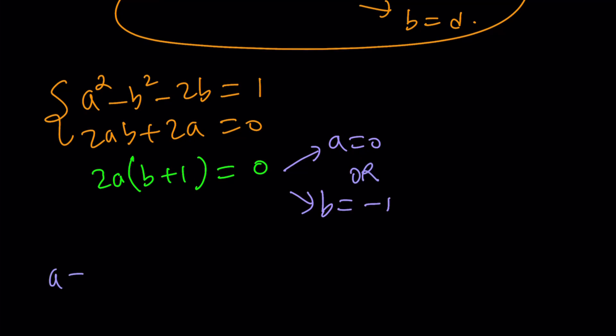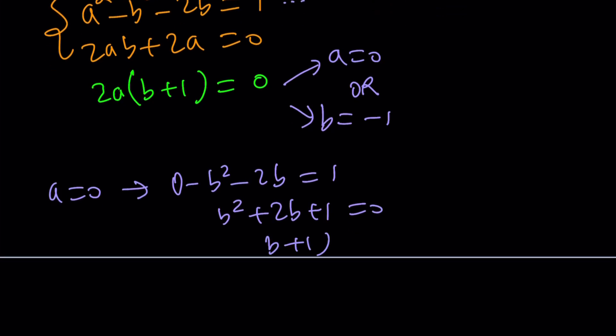What happens if a is 0? And that's going to be checked with the first equation. If a is 0, then we're going to get 0 minus b squared minus 2b equals 1. This means b squared plus 2b plus 1 equals 0. And that means b plus 1 squared equals 0. That means b is equal to negative 1. Awesome. So if a is 0, b is negative 1. Great.